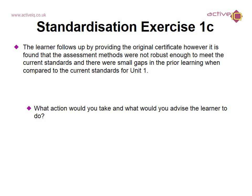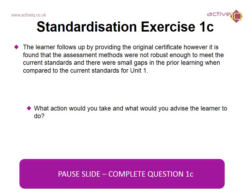Standardisation exercise 1c: The learner follows up by providing the original certificate. However, it is found that the assessment methods were not robust enough to meet the current standards, and there were small gaps in the prior learning when compared to the current standards for unit 1. What action would you take and what would you advise the learner to do? Pause the slide here and complete question 1c.